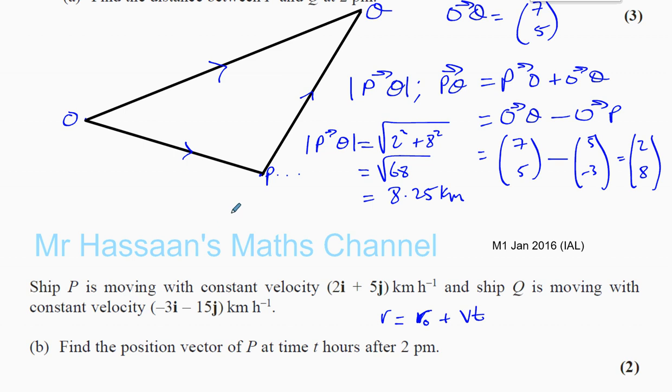Basically what's happening here is, for example, at time equals zero, which was at 2 p.m., P was at this point here and it's moving in this direction with this magnitude, 2i plus 5j. From here it's moving 2i plus 5j, kind of moving in this direction.